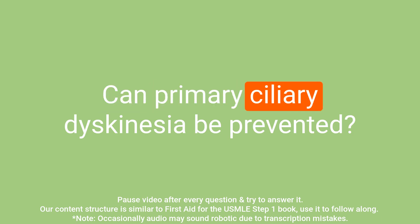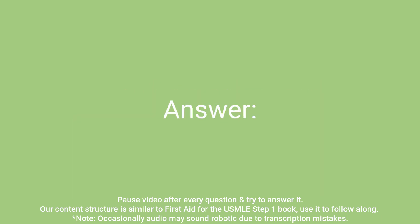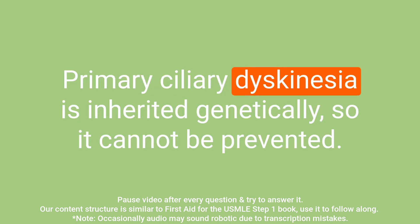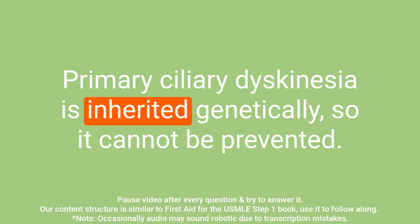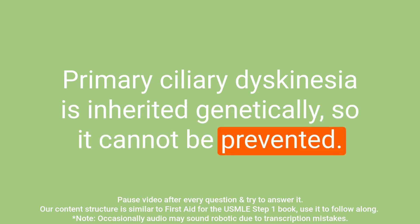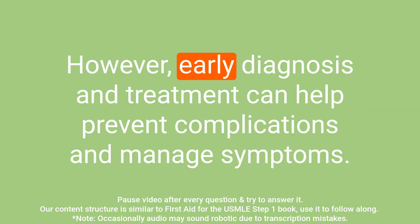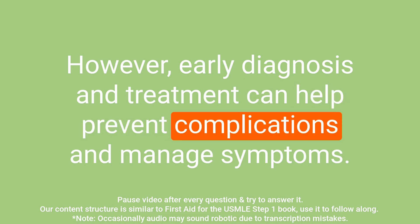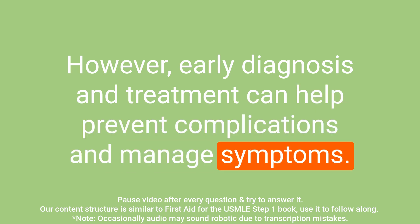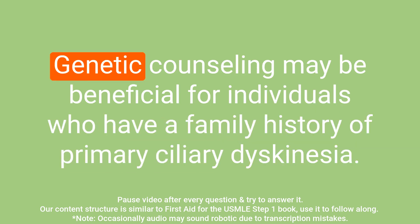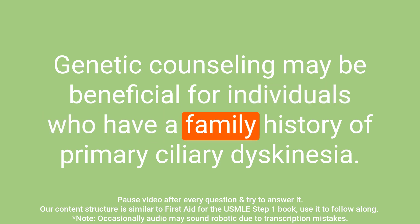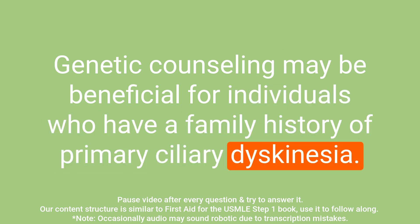Question: Can primary ciliary dyskinesia be prevented? Answer: Primary ciliary dyskinesia is inherited genetically, so it cannot be prevented. However, early diagnosis and treatment can help prevent complications and manage symptoms. Genetic counseling may be beneficial for individuals with a family history of the condition.